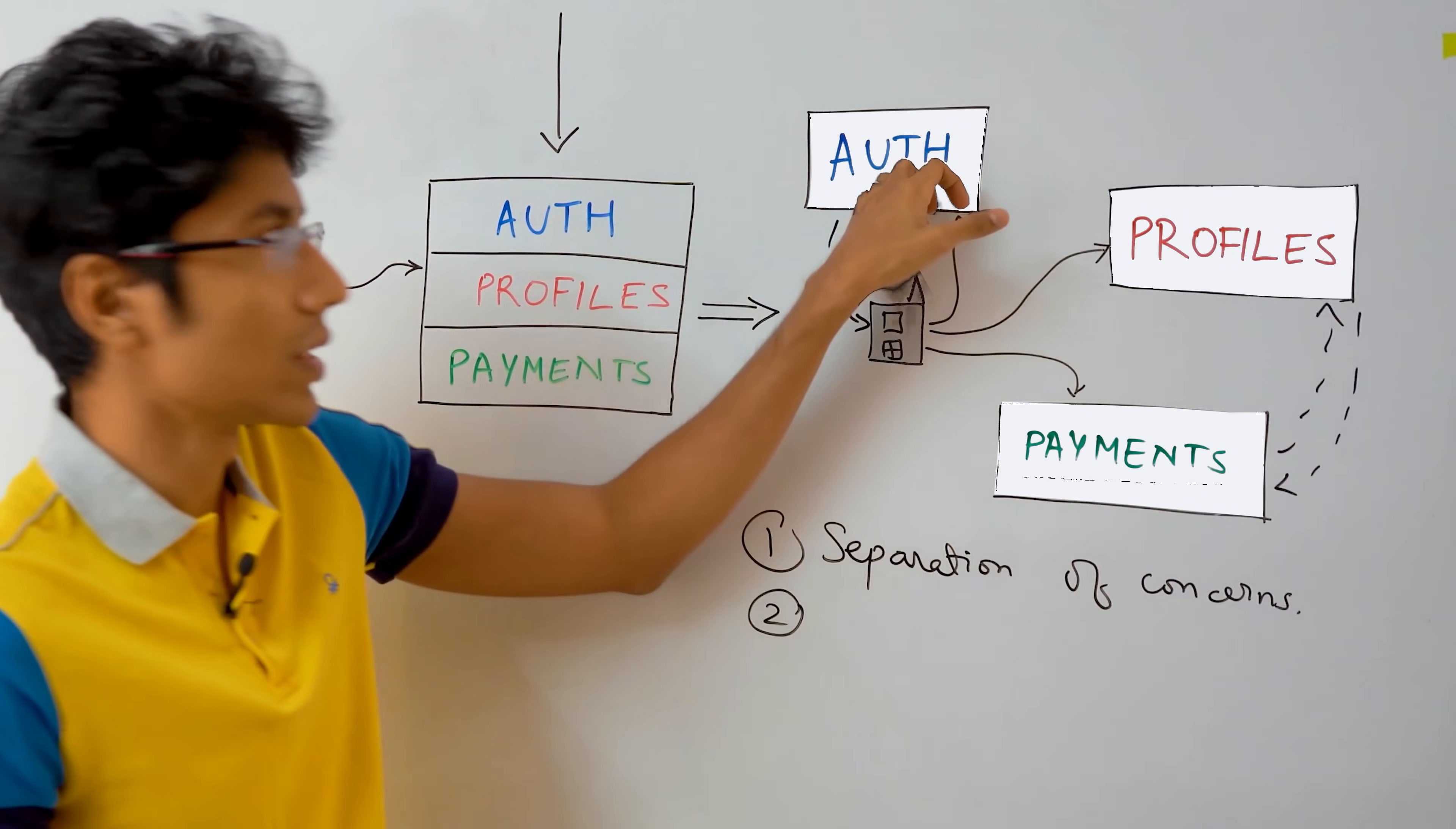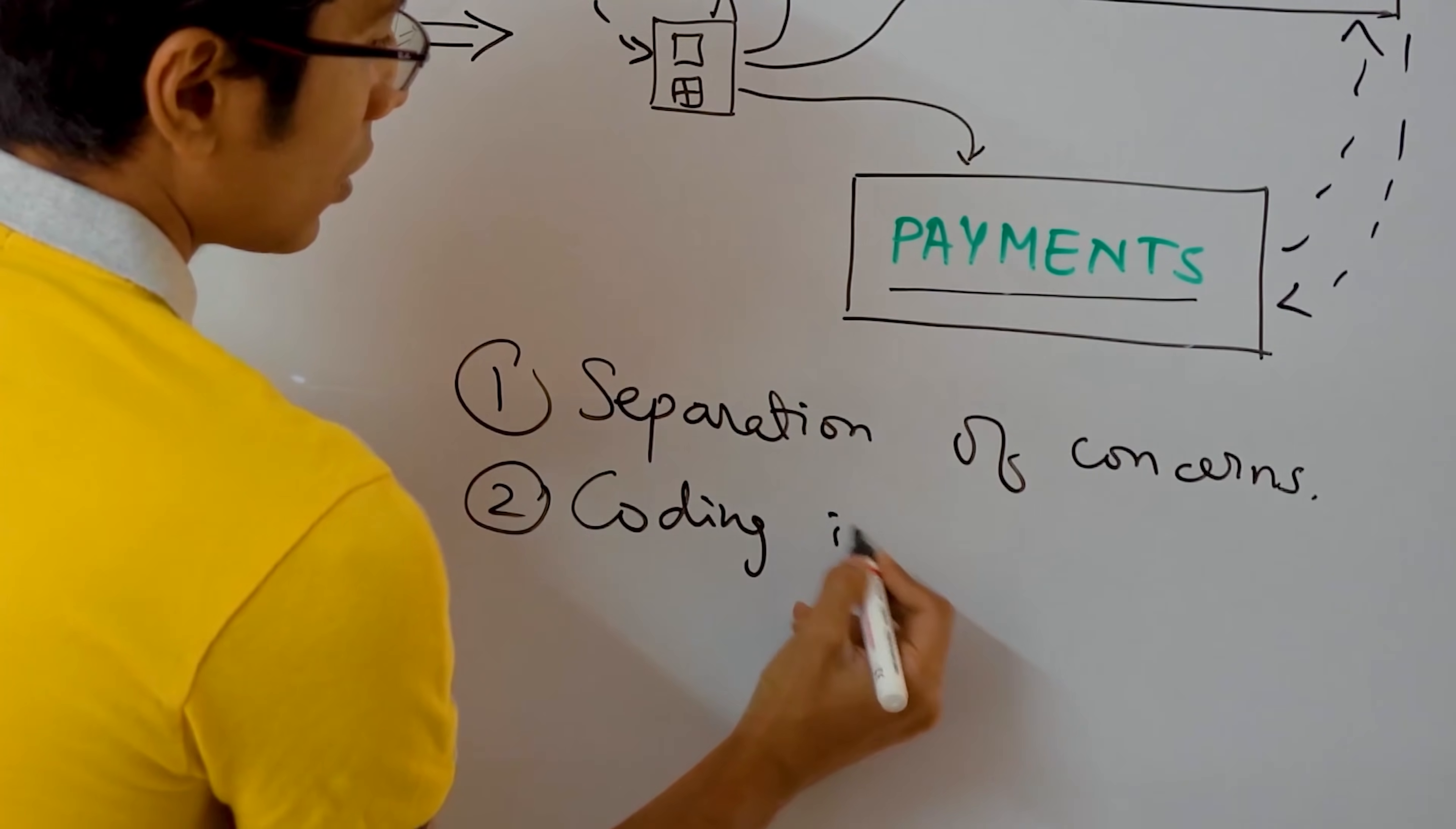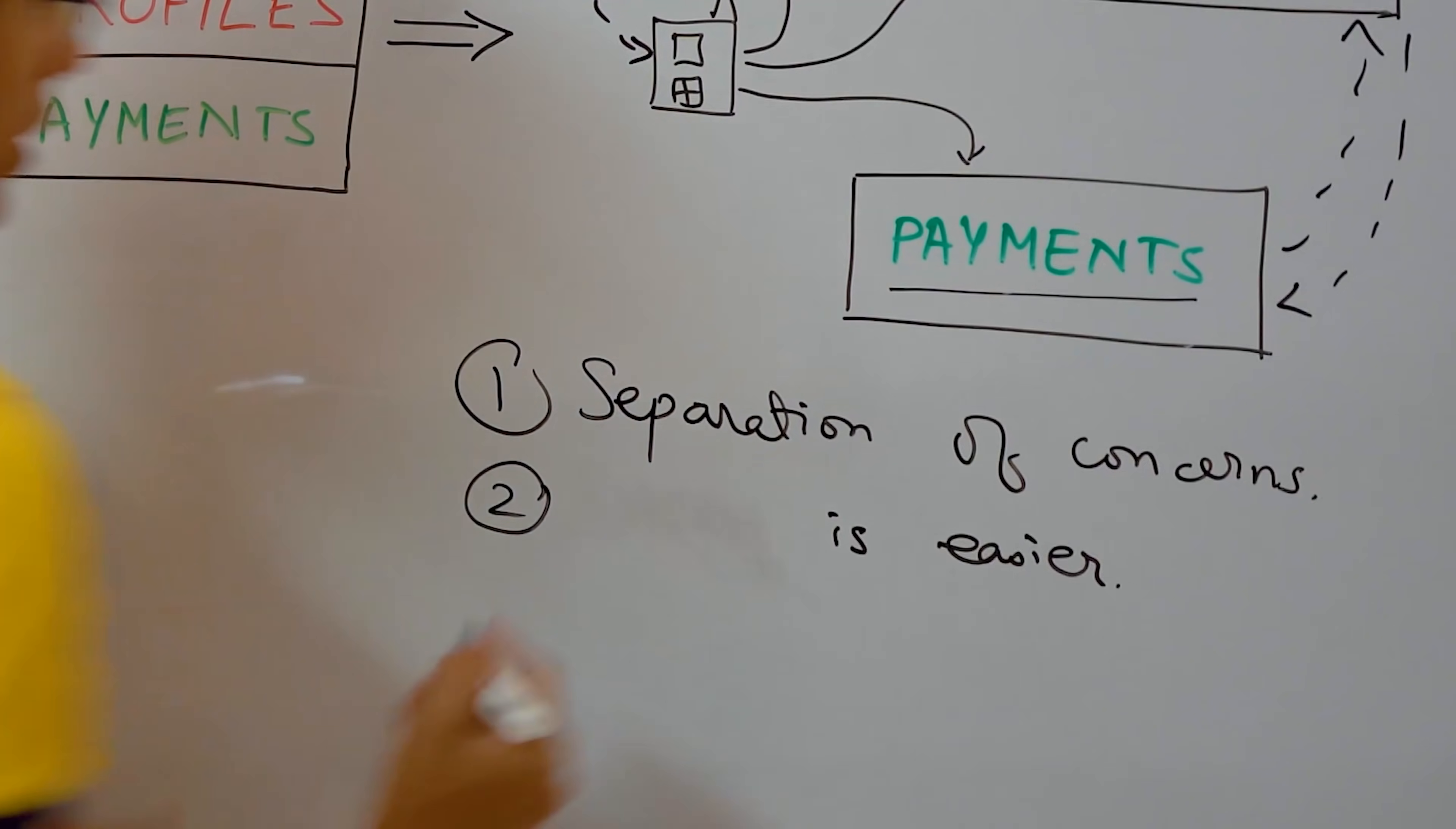Your assumption is that the rest of the services, the engineers in those services will respect the contracts that you're making with them. So to some extent coding is easier, but so is designing these services and the interactions that they'll have. So I would say instead of coding, maybe engineering these services is actually easier.